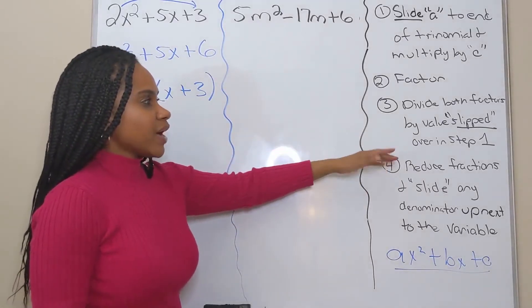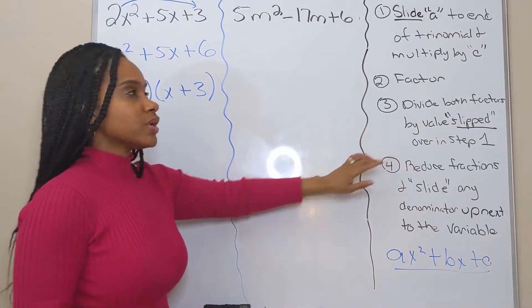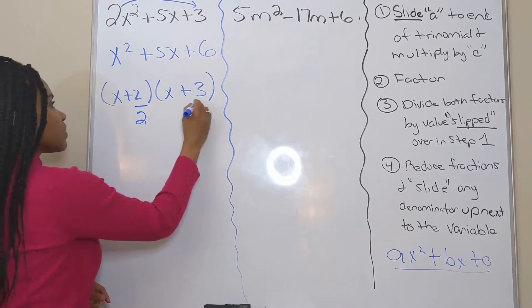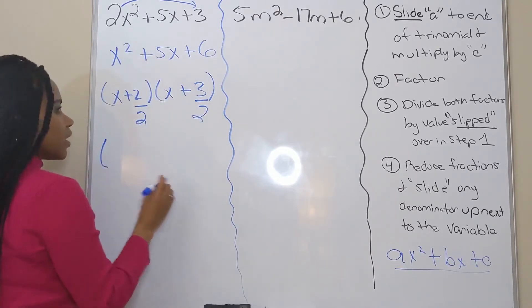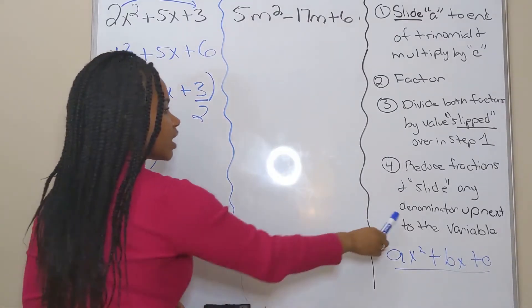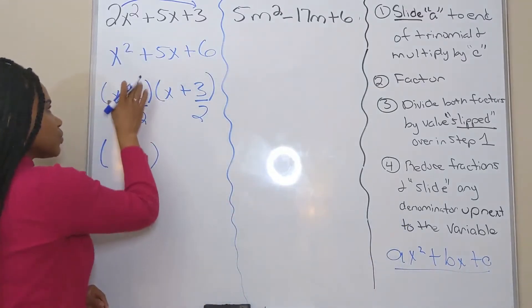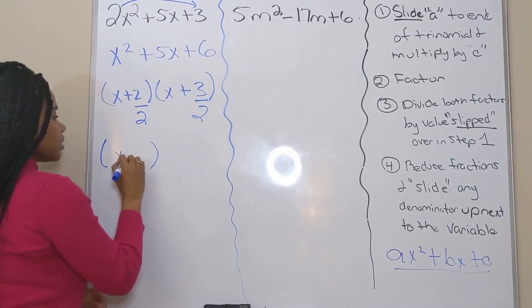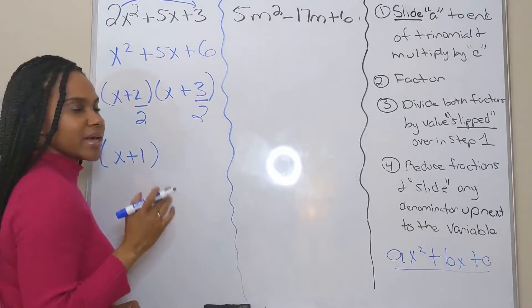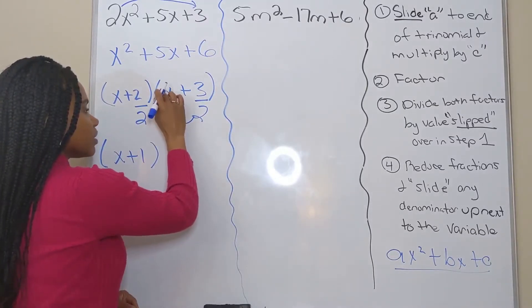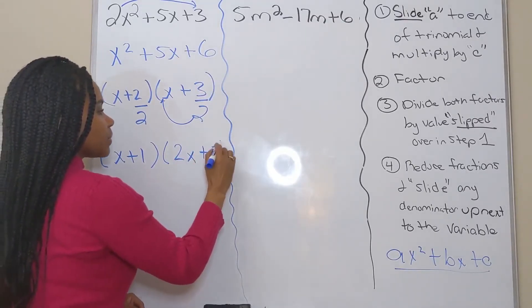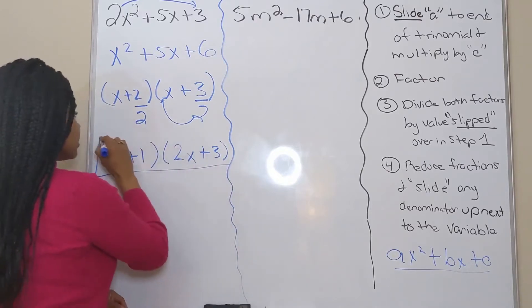Now I want to divide both factors by the value that I slipped over from step one. So I slipped over the two. So these are my factors. I want to divide both factors by the two. All right, now I want to reduce. So I'm going to reduce these fractions and slide any denominator up to the variable. So once I reduce two over two, that's just one. So I don't have a denominator. But here, three over two, I can't reduce that anymore. So I want to slide my denominator up to my variable. So that leaves me with two x. And then I just bring down my numerator. And I have factored this expression.